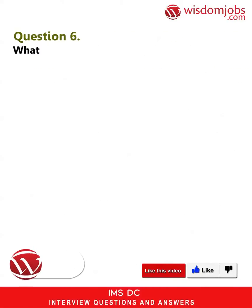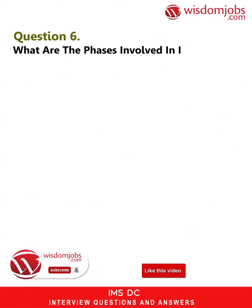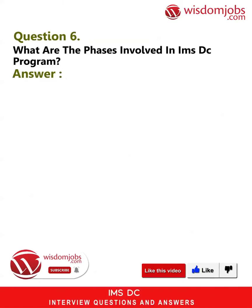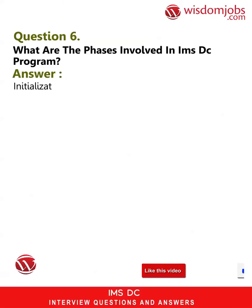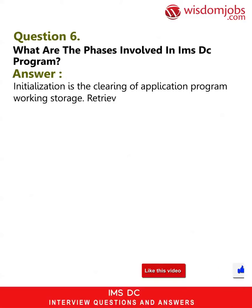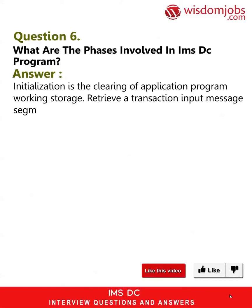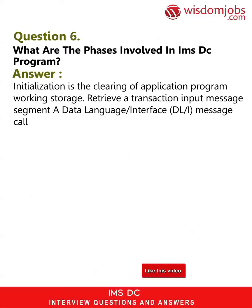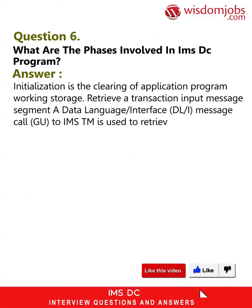ETO reduces the IMS system definition time for those systems where the terminal network is defined dynamically. Question 6: What are the phases involved in an IMS DC program? Answer: Initialization is the clearing of application program working storage. Retrieve a transaction input message segment — a DL/I message call goes to IMS TM and is used to retrieve an input message segment from the IMS queue manager.